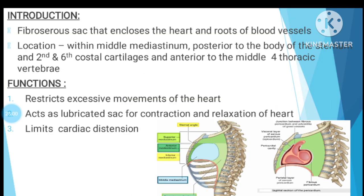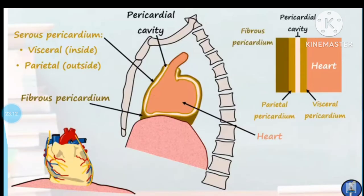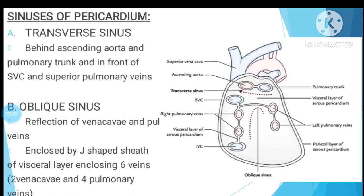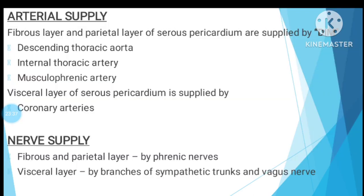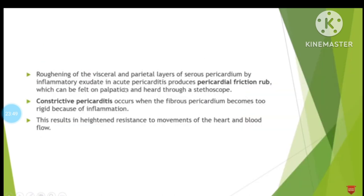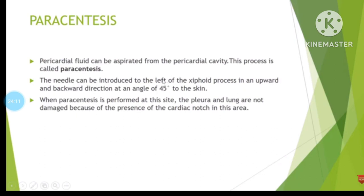To summarize the pericardium: it is a fibro-serous sac covering the heart. Topics covered include location, functions, classification into fibrous and serous layers, with serous further divided into visceral and parietal layers, forming the pericardial cavity with 50 ml of fluid. Contents of the pericardium, transverse and oblique sinuses, blood supply via DIM and coronary arteries, nervous supply via phrenic and vagus nerves, and clinical conditions including pericarditis, cardiac tamponade, constrictive pericarditis, and pericardiocentesis. Thank you for watching. Please like, share, and subscribe.